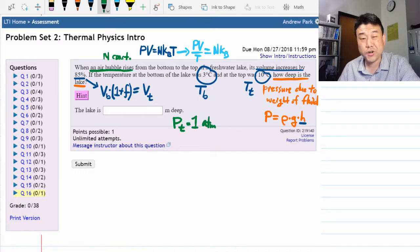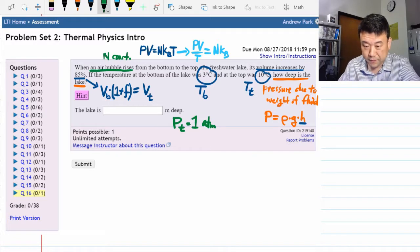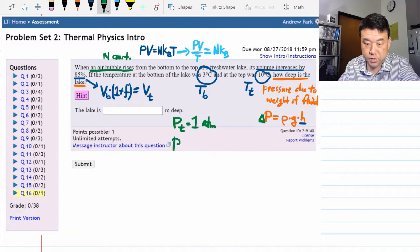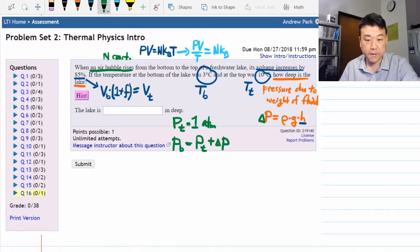So the pressure at the bottom isn't given, but you have this for the change of pressure. So the pressure at the bottom will be equal to pressure at the top plus this change of pressure.